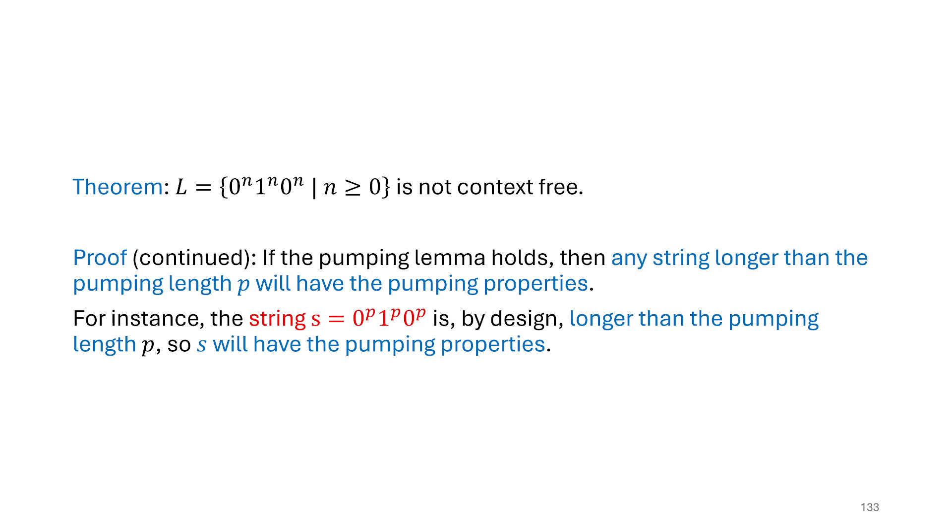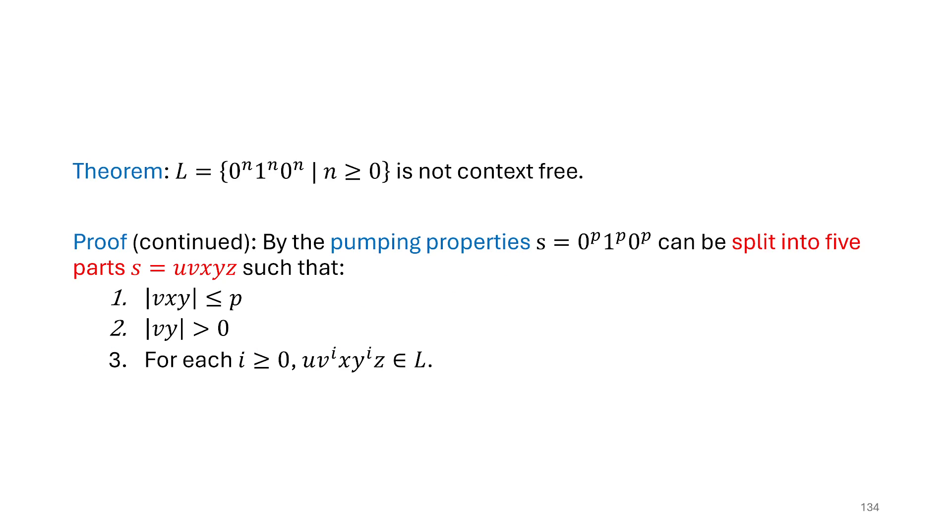So let's continue. So if the pumping lemma is going to hold, then any string longer than the pumping length will have these properties that we'll investigate. Now what that means is we need to pick a string, and I'm going to follow the same design pattern that we've done in the past. I'm going to look above here and see that I've got some ends in my statement, and I can replace those ends with P, and therefore, by design, it's going to be longer than the pumping length, so we know it will have the pumping properties that we're looking for. So again, now that we've picked our string, we know that at least according to what the pumping lemma tells us, we can split that string into five parts. Now remember, we don't get to decide how it's split. We're just saying there is some way it can be split this way, so if any way works, then we're in trouble. We need to show that any way you can split it, it's not going to work, and we have these properties to help us make our argument.